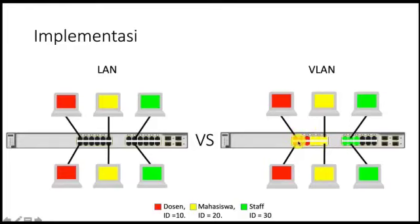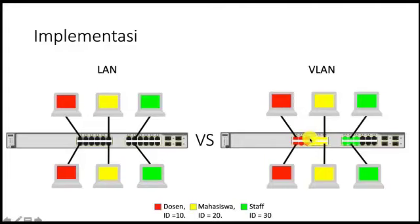Dengan ID 10 untuk dosen, ID 20 mahasiswa, dan ID staff 30, pengiriman data dari sumber dan tujuan itu berdasarkan VLAN ID yang sama. Ketika VLAN ID-nya berbeda, maka tidak akan dikirimkan data. Seolah-olah ini satu switch yang sama, tapi seolah-olah ini tiga switch yang berbeda, sehingga satu ID dengan ID yang lain tidak akan tercampur. Ini merupakan konsep VLAN.